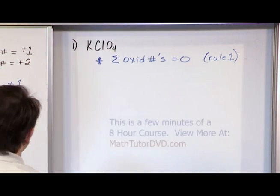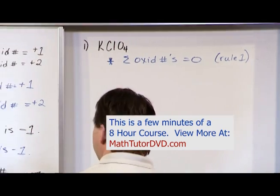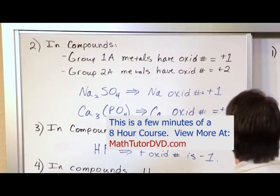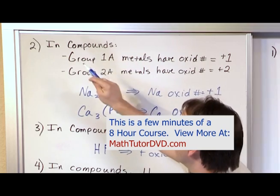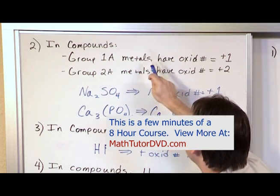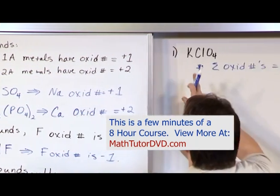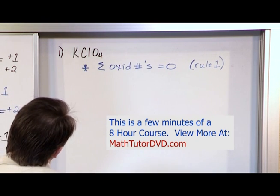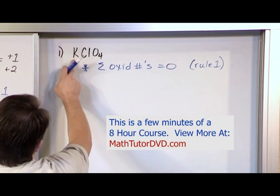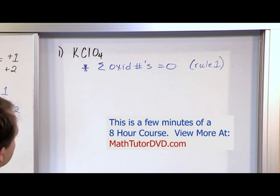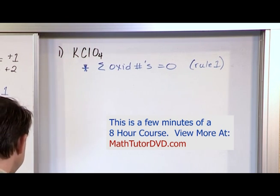So I've done rule number one, and then I go down and look for rule number two, and I see does rule number two apply? It says in compounds, group 1A metals have oxidation number plus one. What we have here is this guy, and this guy is in column number one, so it is a group 1A metal.